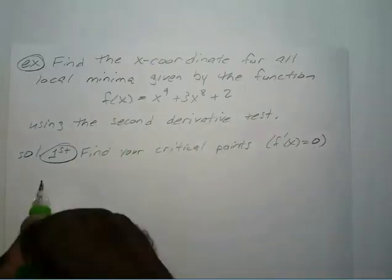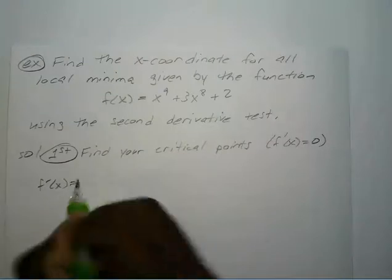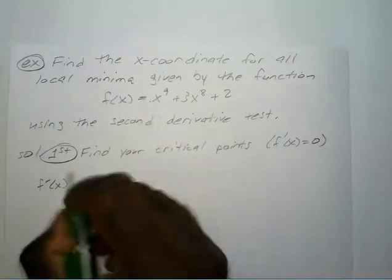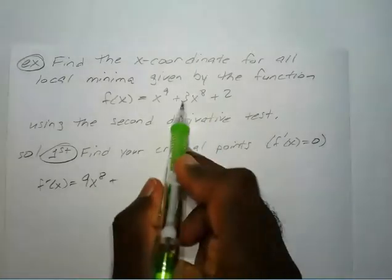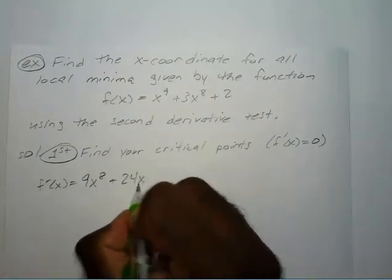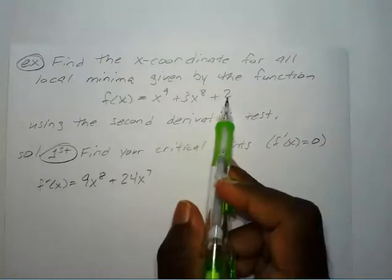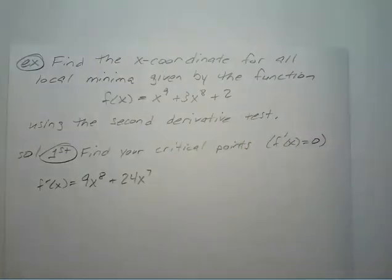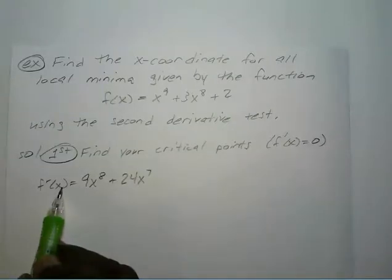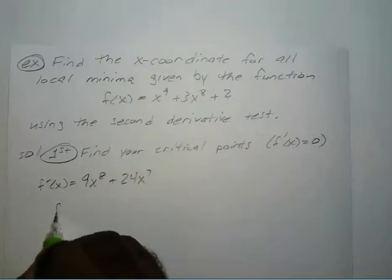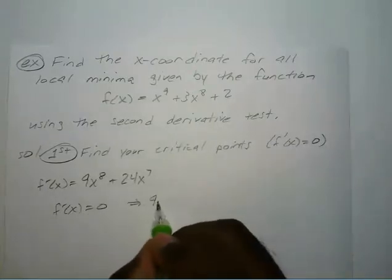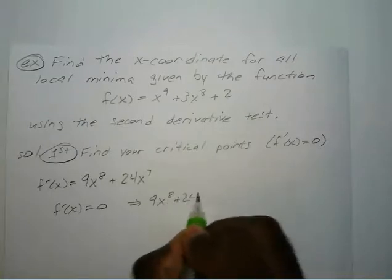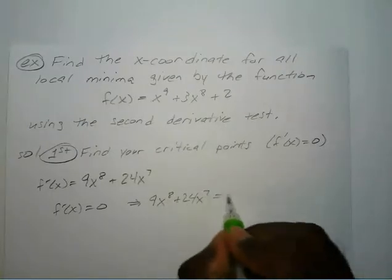So we find our first derivative. F prime of x is equal to 9x to the 8th power plus 24x to the 7th — bring down the 8 to get 24x to the 7th. And that constant becomes zero when you differentiate. So we want to know where our first derivative equals zero: where 9x to the 8th plus 24x to the 7th equals zero.